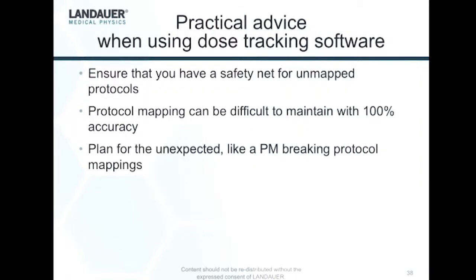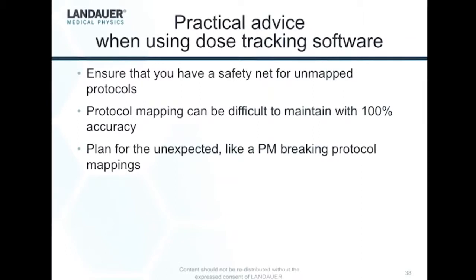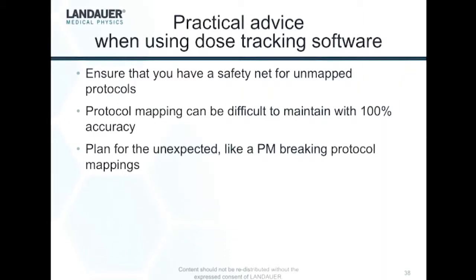Some more practical advice: a lot of the way people set up alerts in dose tracking software is you map protocols to some sort of protocol mapping — whether it's using the RadLex Playbook or creating your own — and then for each entry you create a specific value for that protocol. This creates a problem because those mappings get broken when you upgrade your scanner, change protocol names, or something else happens. It was fine last month, but now your protocols aren't mapped anymore. If you're relying on that protocol mapping for your expected dose index ranges, you're potentially setting yourself up for patients going unmonitored. So you should always have some sort of safety net — something that applies to all patients regardless of whether your protocol is mapped or not.